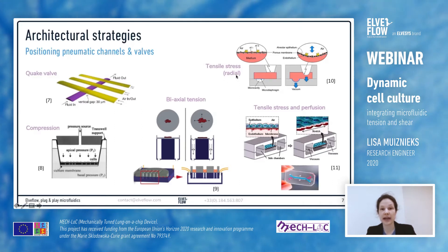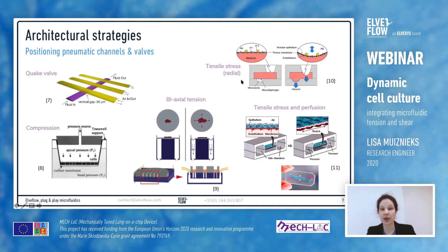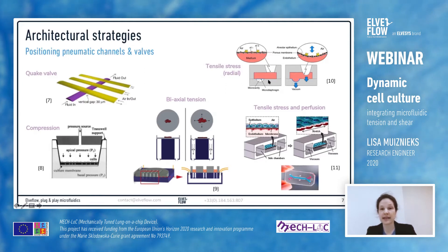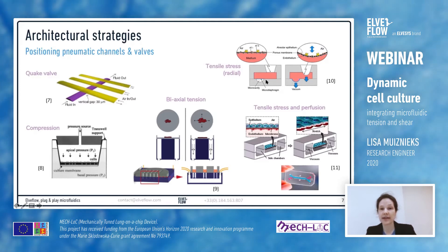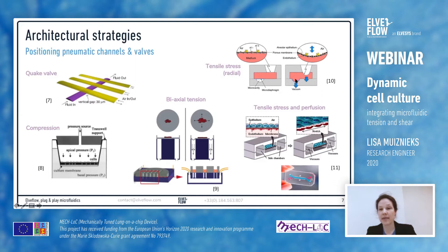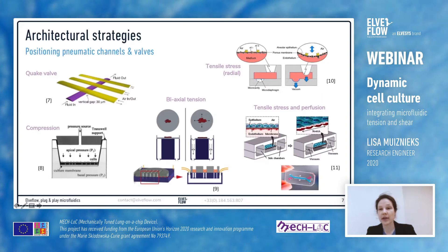Force can also be applied in a radial tensile manner. This lung-on-chip model is a little more complicated as it involves two membranes or micro-diaphragms. The bottom membrane is a micro-diaphragm sitting on top of a pneumatic channel, and when pressure is added to this channel it depresses the diaphragm, moving the liquid and transducing the force onto the upper membrane, which is a mimic of an air-liquid interface that the cells sit on.